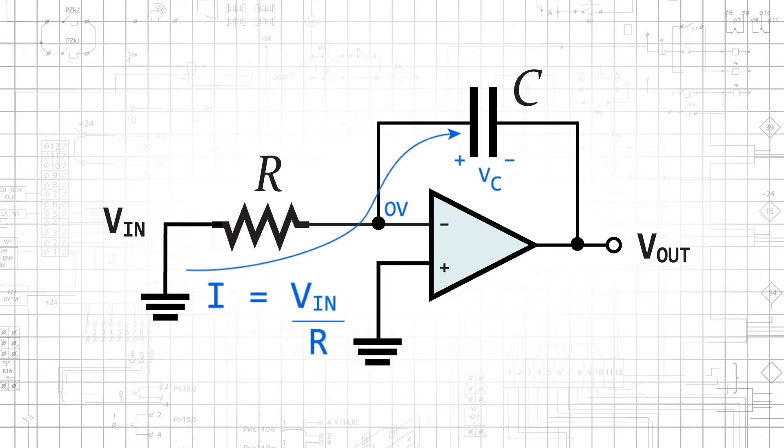Consider the following for our analysis. The virtual short ensures that the voltage at the inverting input terminal is always zero volts. This means the current flowing toward the inverting input terminal depends only on the input voltage and the input resistance. Assume that no current flows into the op-amp's input terminals, so the current through the input resistor is equal to the current through the feedback capacitor.